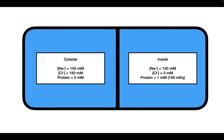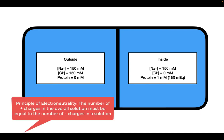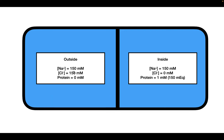In order to understand Gibbs-Donnan equilibrium, we have to understand the law of electroneutrality. The law of electroneutrality states that the net electrical charge of any solution is always going to be zero. On the outside solution, we have 150 millimolar worth of sodium and 150 millimolar worth of chloride. Sodium has one positive charge and chloride has one negative charge. Therefore, the concentration of positive charge equals the concentration of negative charge, and the net charge of the solution is zero.